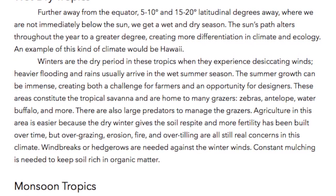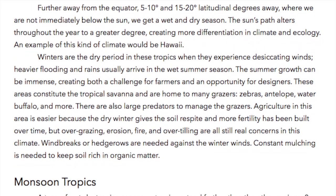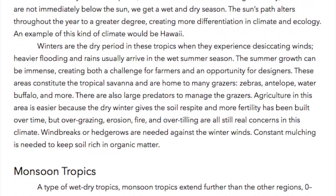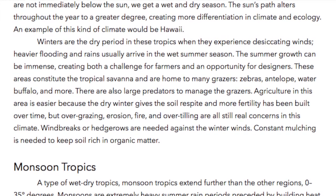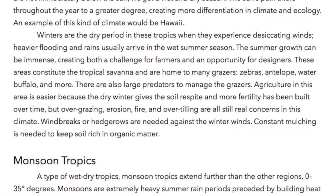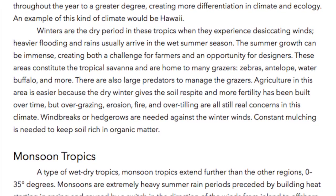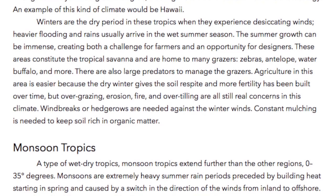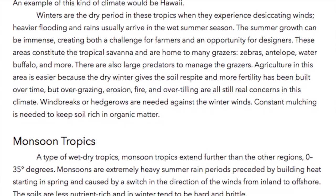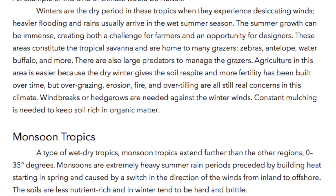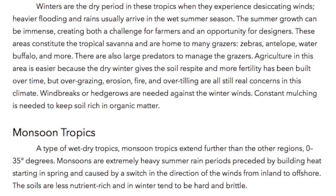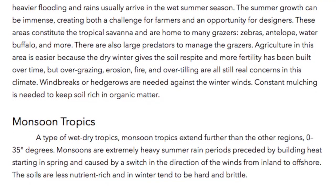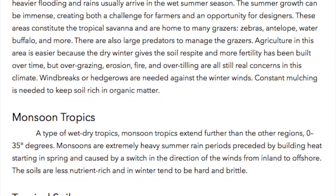These areas constitute the tropical savannah and are home to many grazers — zebras, antelope, water buffalo, and more. There are also large predators to manage the grazers. Agriculture in this area is easier because the dry winter gives the soil respite and more fertility has been built over time. But overgrazing, erosion, fire, and overtilling are all still real concerns in this climate. Windbreaks or hedgerows are needed against the winter winds, and constant mulching is needed to keep soil rich in organic matter.